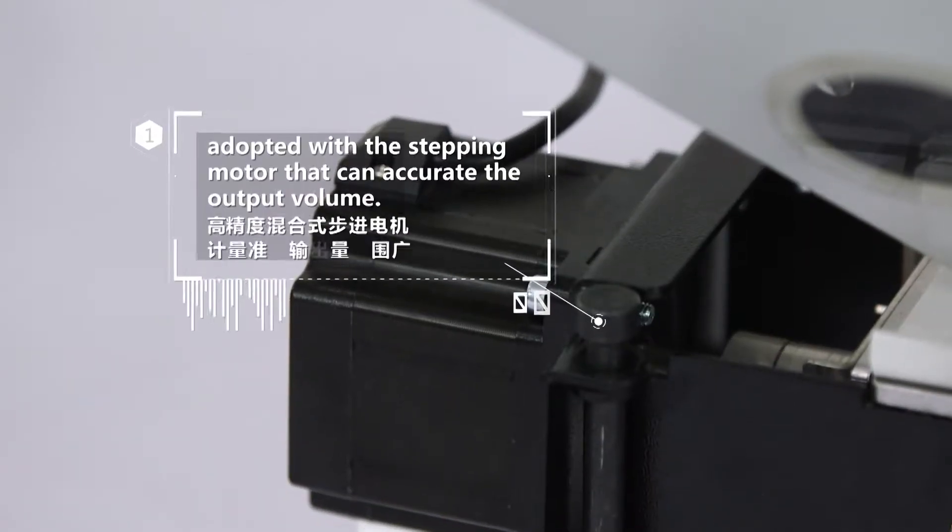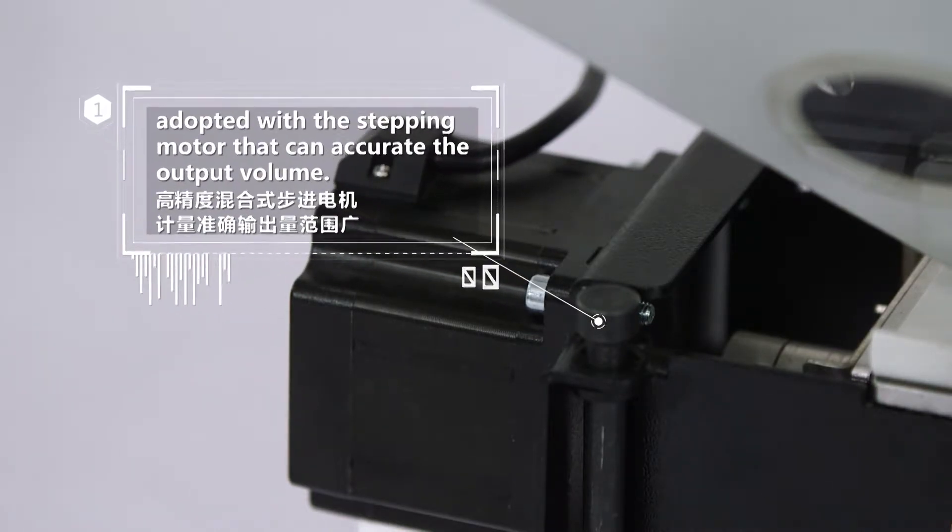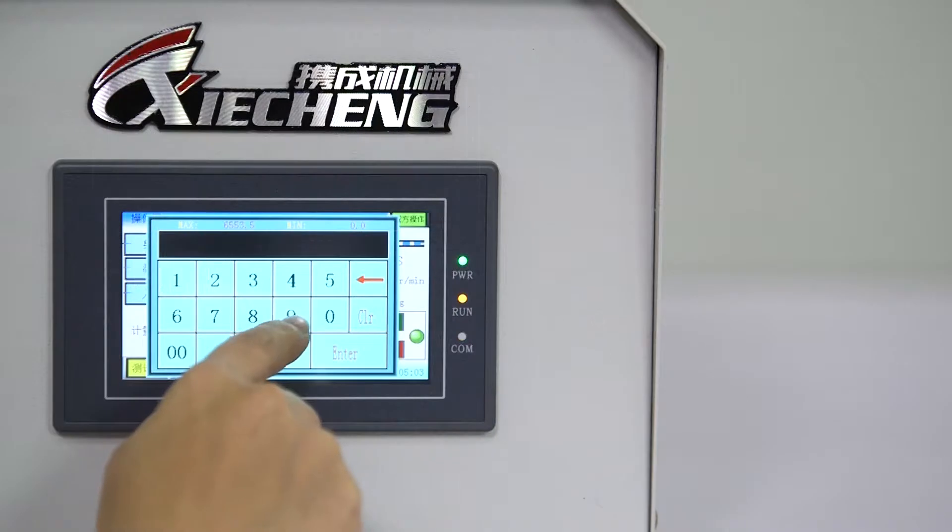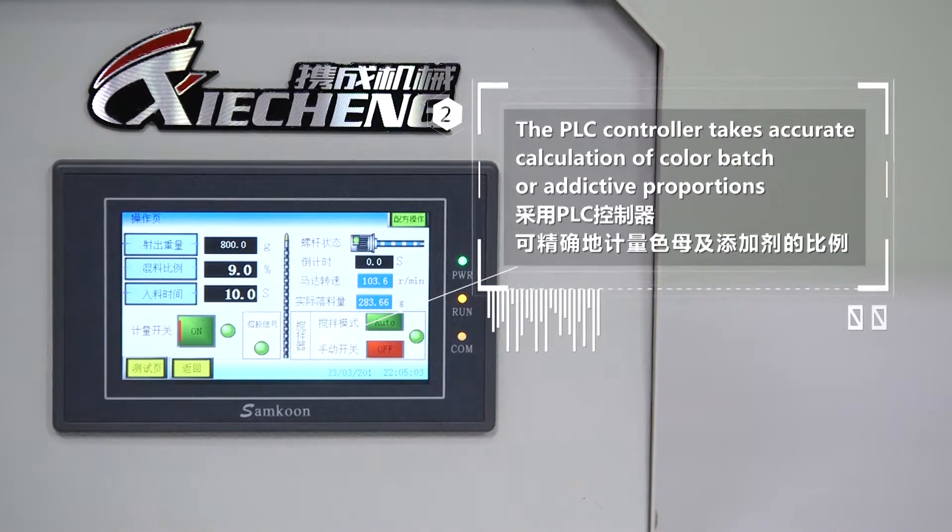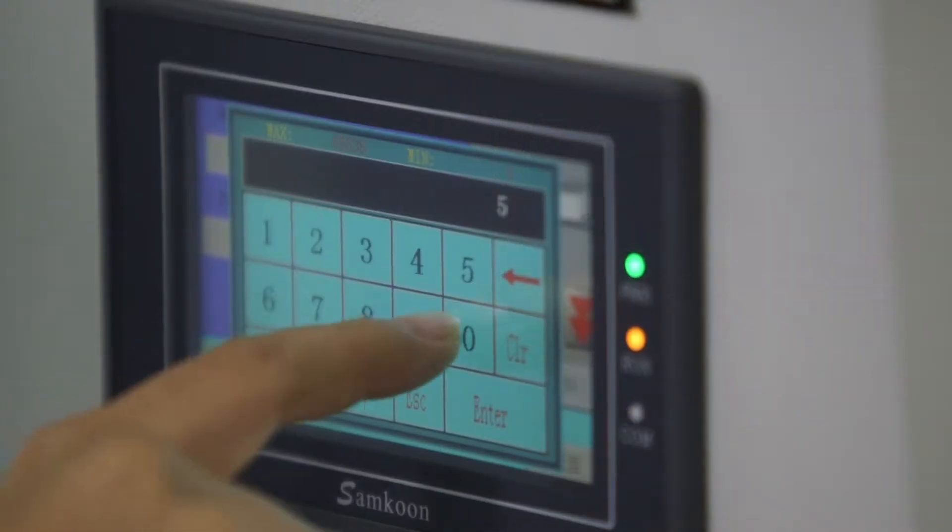Features: 1. It is adopted with the stepping motor that can accurately control output volume. 2. The PLC controller takes accurate calculation of color batch or additive proportions.